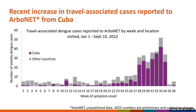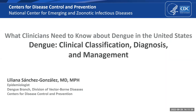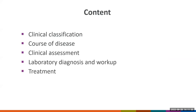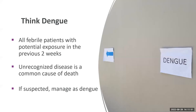Dr. Liliana Sanchez will now talk about dengue clinical presentation and recommendations for case management. The clinical classification of dengue was updated by the World Health Organization in 2009. This classification by severity aims to guide clinicians' decisions as to where and how intensively the patient should be observed and treated. There are three clinical categories: dengue, dengue with warning signs, and severe dengue. It's important to recognize this disease, as not recognizing it continues to be one of the main causes of death among dengue patients. If you have clinical suspicion, you should monitor and manage patients as dengue, as appropriate and timely management with IV fluids can be life-saving.